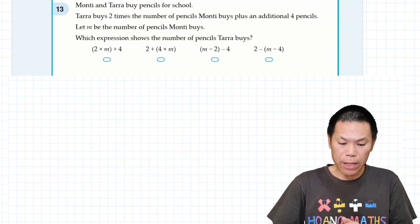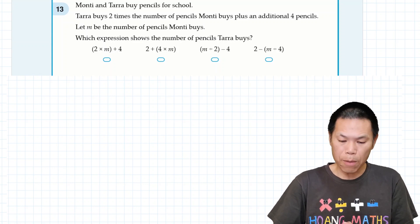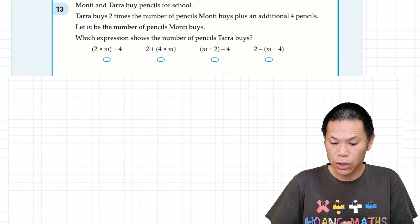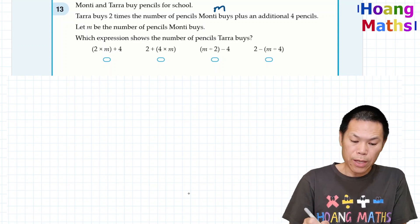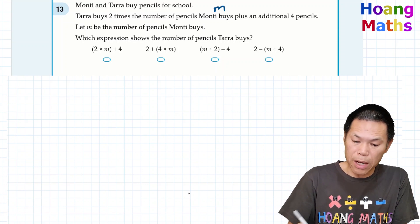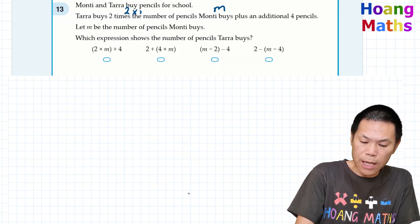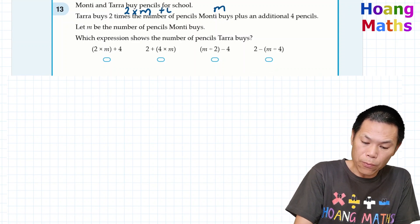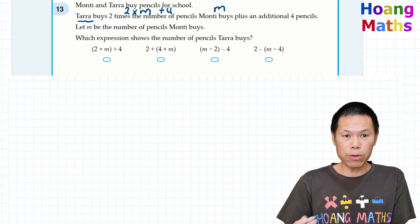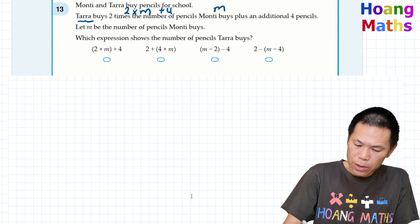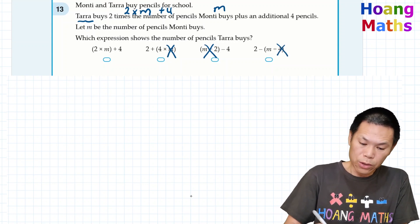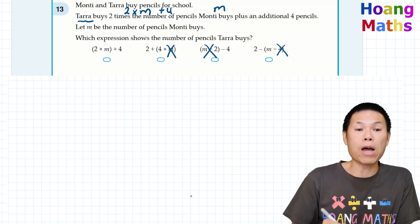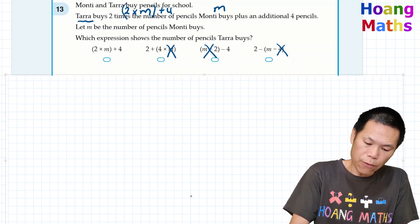Next one: Monty and Tara buy pencils for school. Tara buys 2 times the number of pencils Monty buys, plus an additional 4 pencils. Let M be the number of pencils Monty buys. Tara's amount is 2 times M plus 4. So the expression is 2M + 4. The options with 4M, M divided by 2, or M divided by 4 are all wrong. The correct answer is 2M + 4.